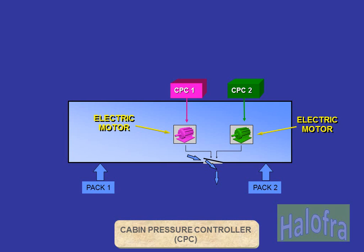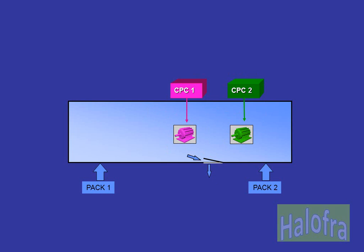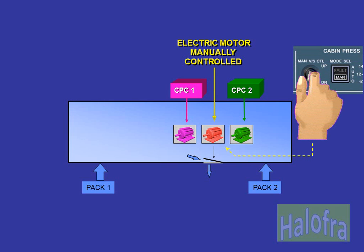Automatic control of the outflow valve is provided by two cabin pressure controllers. Each controller is connected to an electric motor to move the outflow valve. A controller-motor combination is known as a system. Only one system will operate at a time, with the other system acting as backup. A third motor is installed for use in the event of both automatic systems failing, and requires a manual input to open or close the outflow valve.